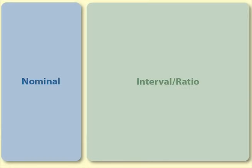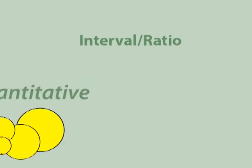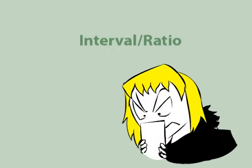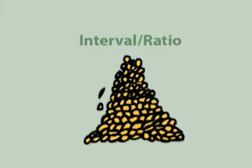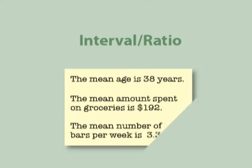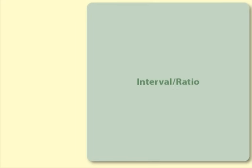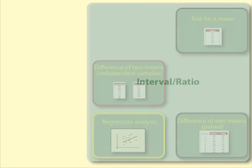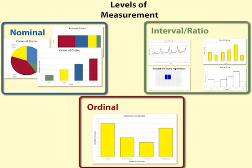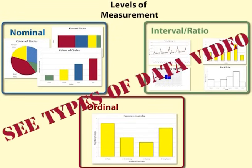The other type of data is interval ratio, also called quantitative. Examples of interval ratio data are daily sales figures for choconutties, weight of peanuts, or temperature. The most common summary value for interval ratio data is a mean. Tests that involve interval ratio data are test for a mean, difference of two means independent samples, difference of two means paired, and regression analysis. For more help on levels of measurement, see our video: types of data — nominal, ordinal, interval ratio.